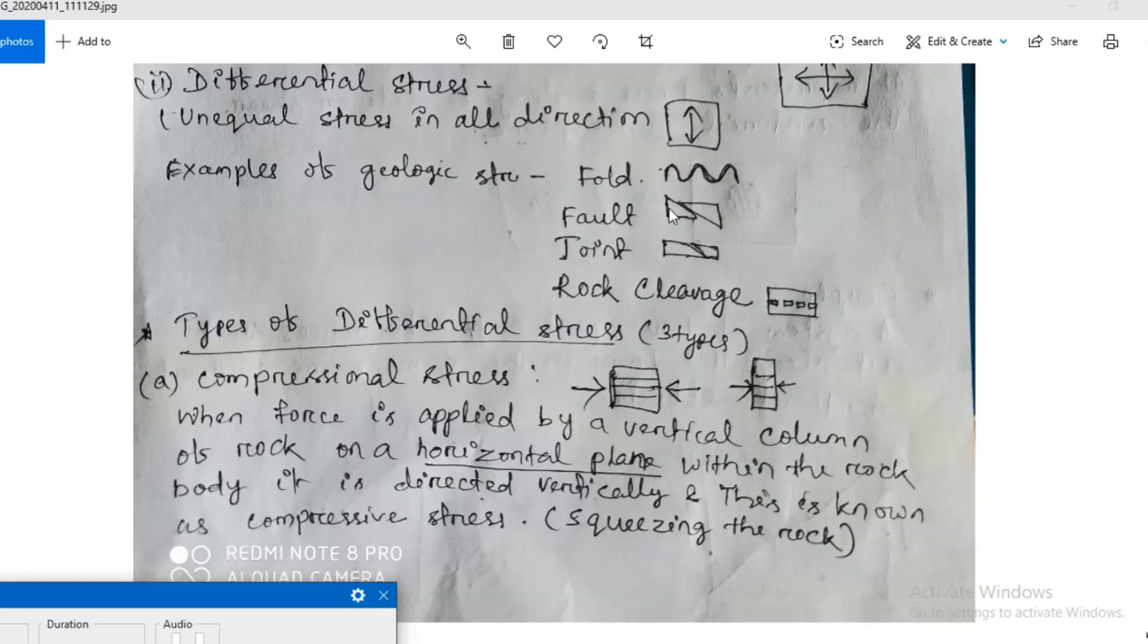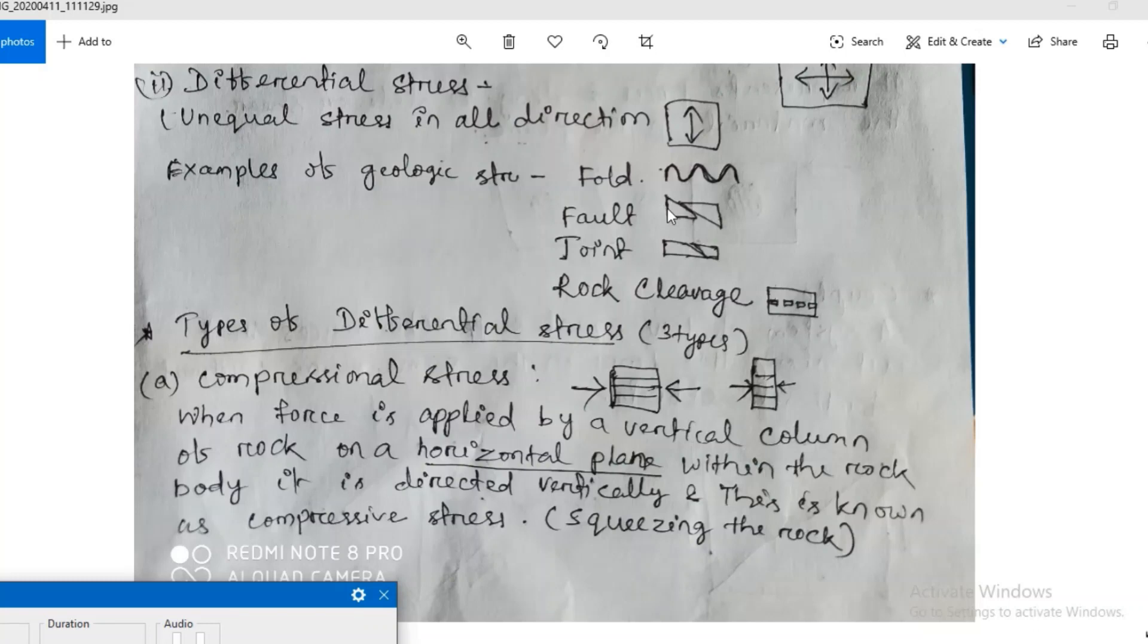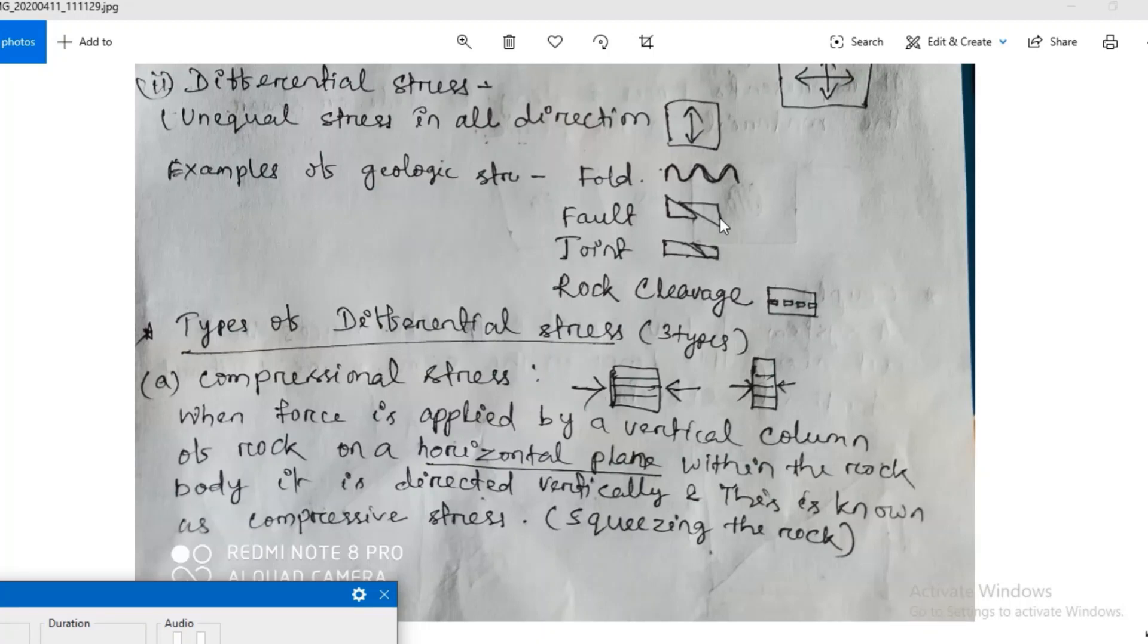When the rock is not in the right position, then it will break if the rock is solid or brittle. One part of the broken body moves upward and another moves downward, that is called fault.